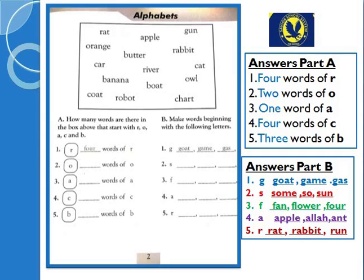Isi tarah baccho agar hum O ko dekhte hain — orange aur owl, two words. Isi tarah number third pe A ke saath — ek apple hai, koi aur nahi hai. C ke saath agar aap search karen toh car hai, cat hai, court hai, chart hai — four words. Aur agar aap B ke saath search karo toh butter hai, banana hai, boat hai — three words. Toh aapne in boxes mein likhna hai.